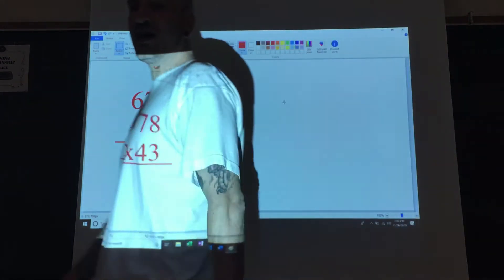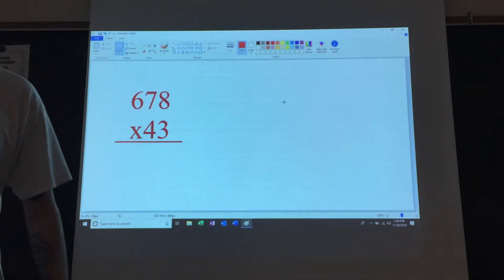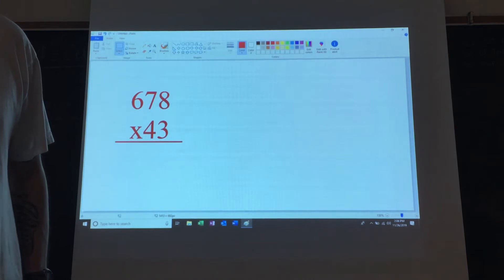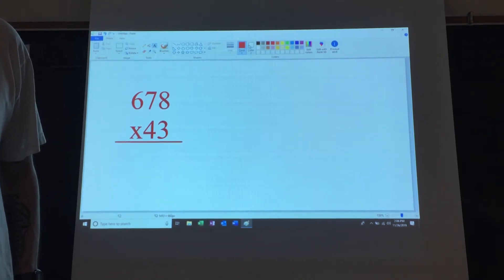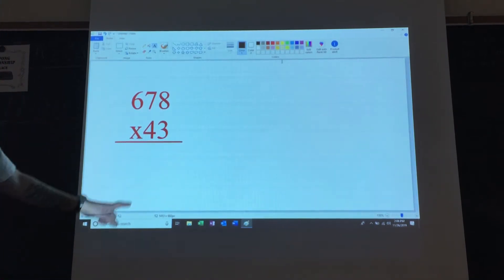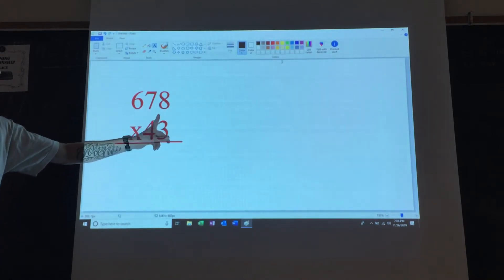Okay, so we're multiplying a three-digit number by a two-digit number: 678 times 43. What you want to do first is multiply the 3 by the 8, 3 times 7, then 3 times 6. You get your answer down here.